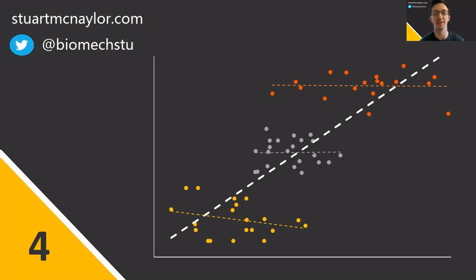Which brings us on to mistake number four, which is combining within and between participant or group analyses. Not only can this result in spurious correlations, but it can also falsely inflate the degrees of freedom, leading to an increased likelihood of false positive results.